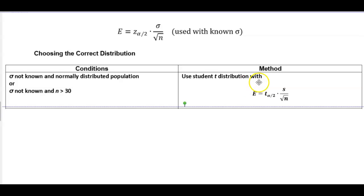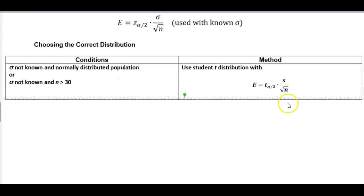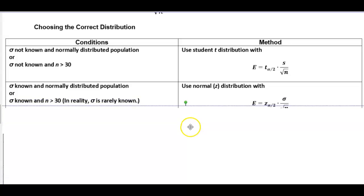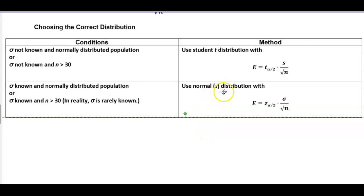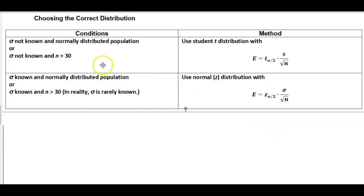then we use the student t distribution with the margin of error equal to the critical t value times the sample standard deviation divided by the square root of n. If the population standard deviation is known and the population is normally distributed, or the population standard deviation is known and n is greater than 30 — though in reality the population standard deviation is rarely known — we would use the normal z distribution with the margin of error equal to the critical z value times the population standard deviation divided by the square root of the sample size.